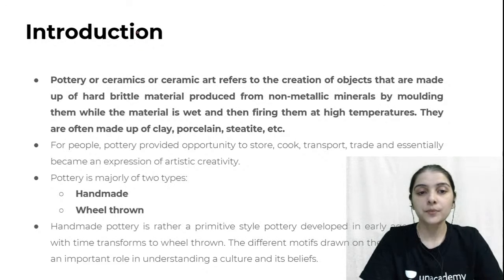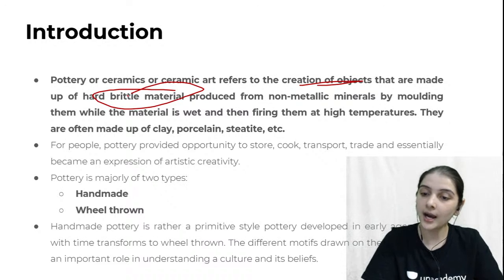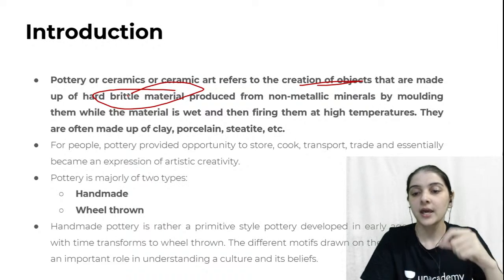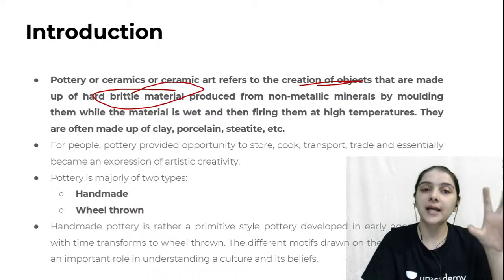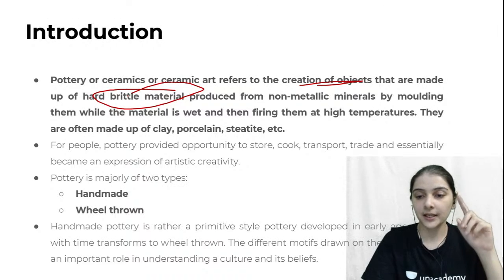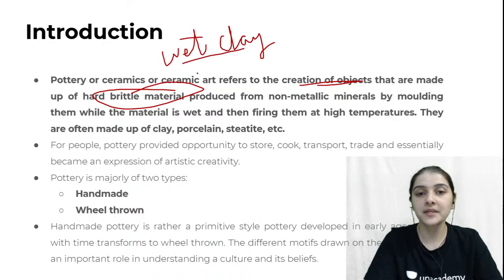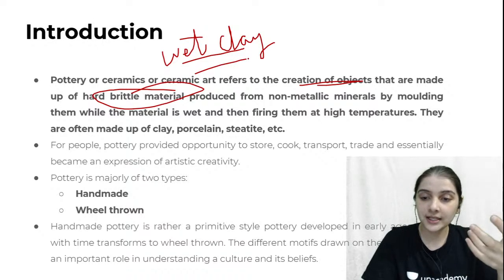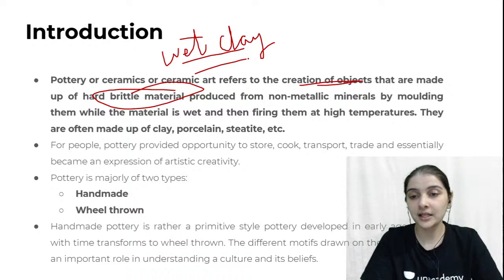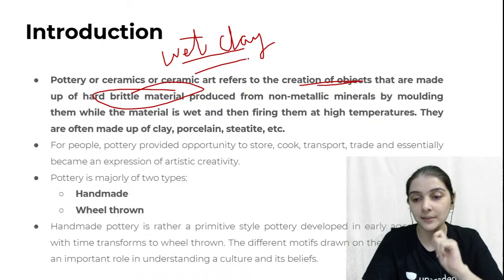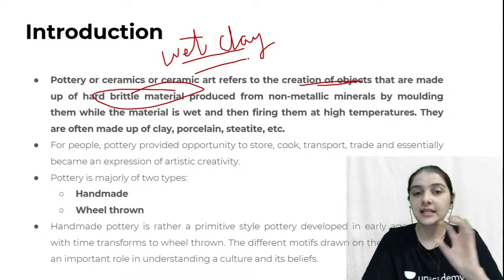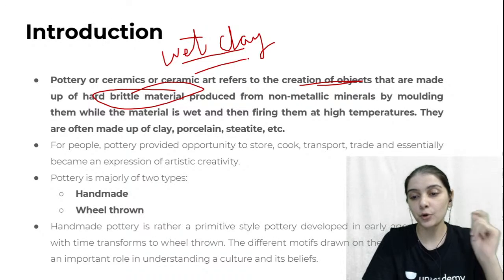Hard brittle material — what is it, how does it work? It should be some non-metallic mineral that is shaped through molding. So whenever we talk about ceramics, the first part that comes to mind is that ceramics is related to clay. Wet clay — what we call chikni mitti — can be molded in various ways. After molding it at high temperature, it is baked. Clay, porcelain, steatite — all these things form part of ceramics or pottery.